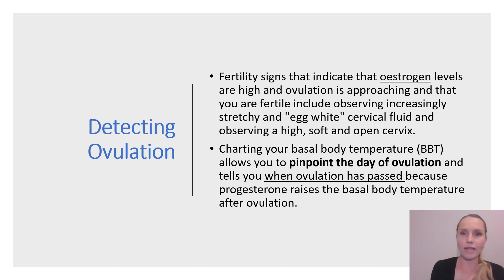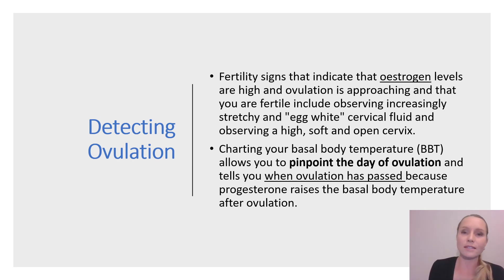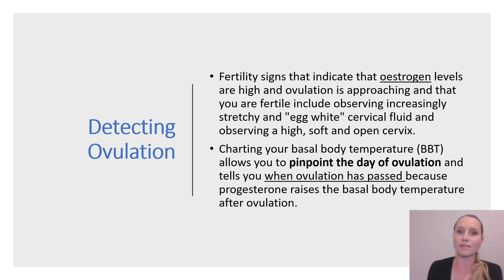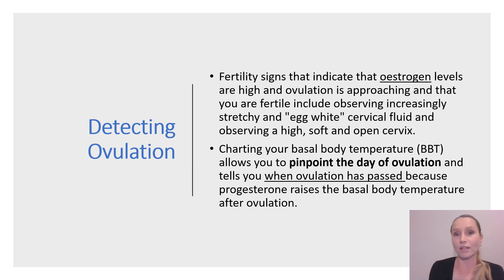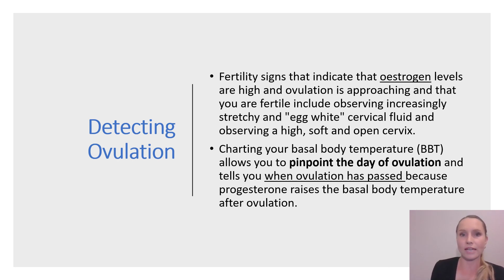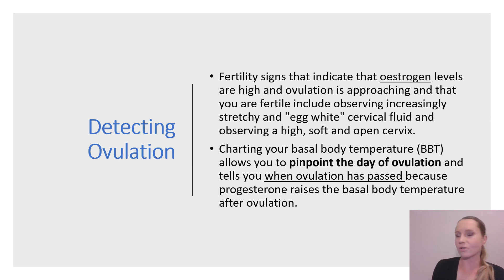Your ovulation date and your fertile window can be detected by charting your fertility signs. Your body produces these wonderful signals that tell you that ovulation is approaching and also when ovulation has passed. Fertility signs that indicate estrogen levels are high and ovulation is approaching include observing increasingly stretchy egg white cervical fluid and observing a high, soft and open cervix. Commercial devices such as ovulation prediction kits and fertility monitors can also tell you that ovulation is approaching by measuring the presence of estrogen or luteinizing hormone in urine. Charting your basal body temperature allows you to pinpoint the day of ovulation and tells you when ovulation has passed, because progesterone raises the basal body temperature after ovulation. Remember, those kits and devices cannot be used to confirm that ovulation has occurred — they can only tell you that you're potentially going to ovulate.